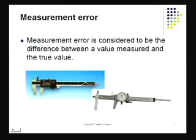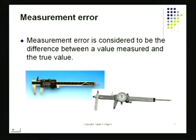Measurement error is the difference between the value you observe and the true value of the item. It depends on what kind of instrument you are using and who is making the measurement. Therefore, any time you use an instrument, keep in mind the possibility of measurement errors being present.